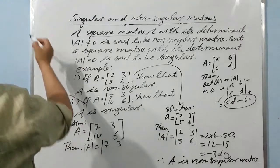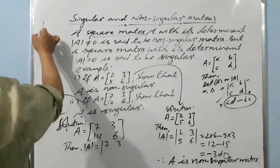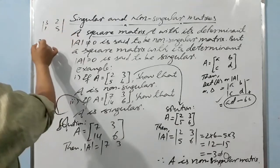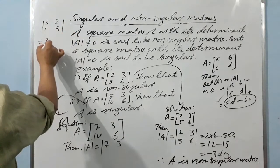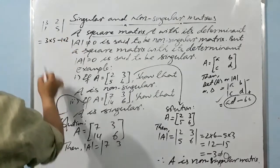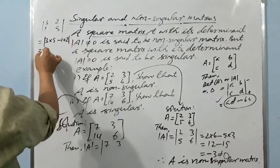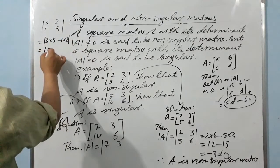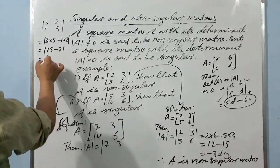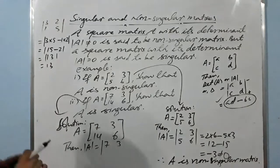According to my experience, students sometimes write, for example, for the matrix [3, 2; 1, 5], they compute 3 into 5 minus 1 into 2 to get 15 minus 2 equals 13, which is fine. But they incorrectly continue writing the determinant symbol on the result. Never take the meaning of this sign as a modulus sign.